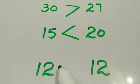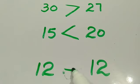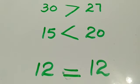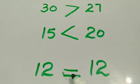And 12 is equal to 12 because 12 is equal to 12. And we draw two parallel lines in this way.